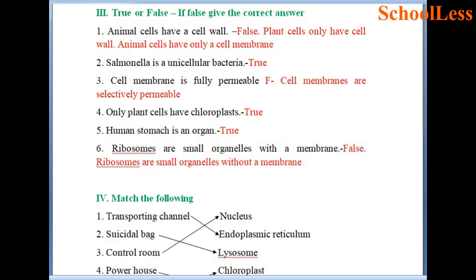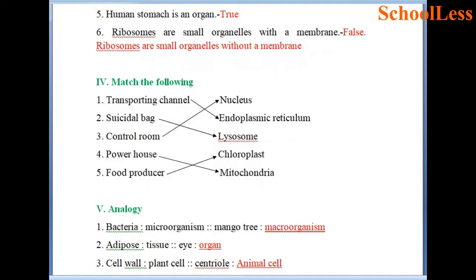Animal cells do not possess chloroplasts because they do not have the capacity to photosynthesize. Statement 5: Human's stomach is an organ — true. Statement 6: Ribosomes are small organelles with a membrane — this is false because ribosomes are small organelles without a membrane.